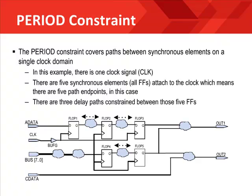There are three global timing constraints. The first, and most significant because it covers 80-plus percent of internal delay paths, is the period constraint. The elements of the group are simply the synchronous elements the clock is attached to. In this example, there is one clock and it attaches to five flip-flops, defining them as both a group of sources and a separate group of destinations. There would be three delay paths constrained, covering the paths from flip-flop one to two, two to three, and four to five. Note there is no direct relationship between the number of path endpoints and the number of constrained paths — that is simply design dependent.